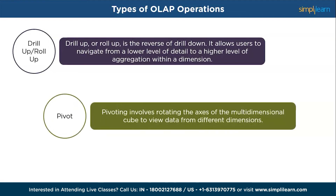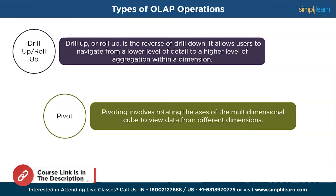Lastly, we have pivot. Pivoting involves rotating the axis of the multidimensional cube to view data from different dimensions, allowing users to reorganize data and analyze it from alternative perspectives. For example, if you want to analyze sales data by city and product category, by pivoting you can view sales figures for each product category across all cities, helping you decide on product assortment or marketing strategies.